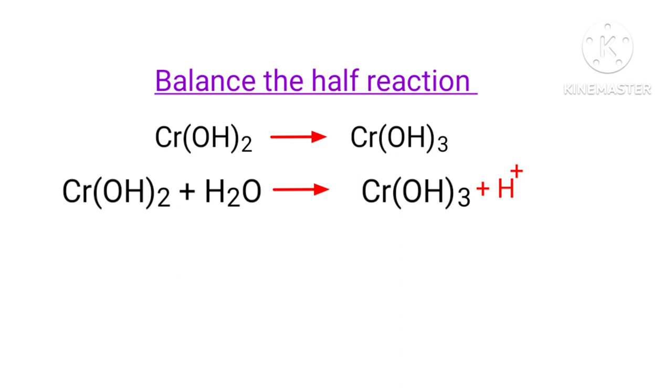For a redox reaction, the addition of charges should be equal on both sides. As per assigning oxidation number rule, the oxidation number of a neutral compound is equal to zero, and the oxidation number of a monoatomic ion is equal to the charge of the ion.